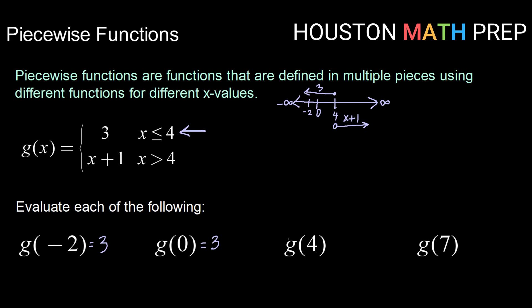Checking out our next one, g of four. Looking at where does four fall. In this case four is very special because four is the connector point. So to determine which piece to use we need to look for the or equal to symbol, and we need to use the piece that has it. So in this case we're going to use again the top piece. g of four equals three.